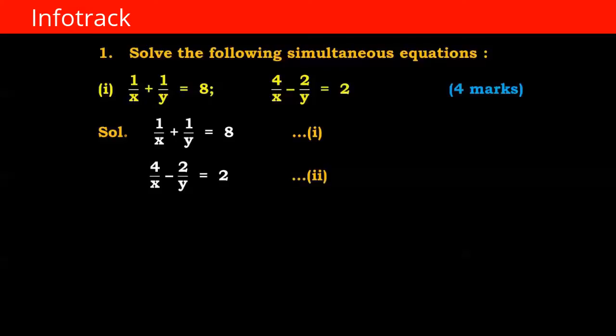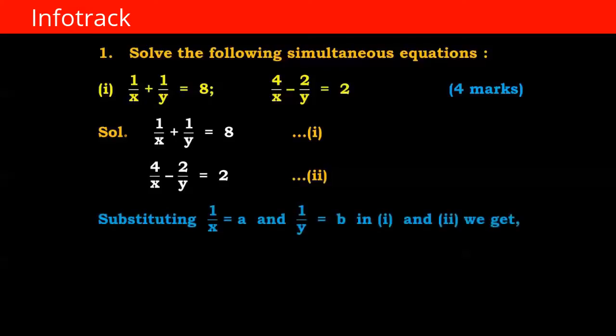In this equation, the variable is in the denominator. So we can substitute 1 upon x equals a and 1 upon y equals b. In equations 1 and 2, we get a plus b equals 8 — equation number 3 — and 4a minus 2b equals 2 — equation number 4.